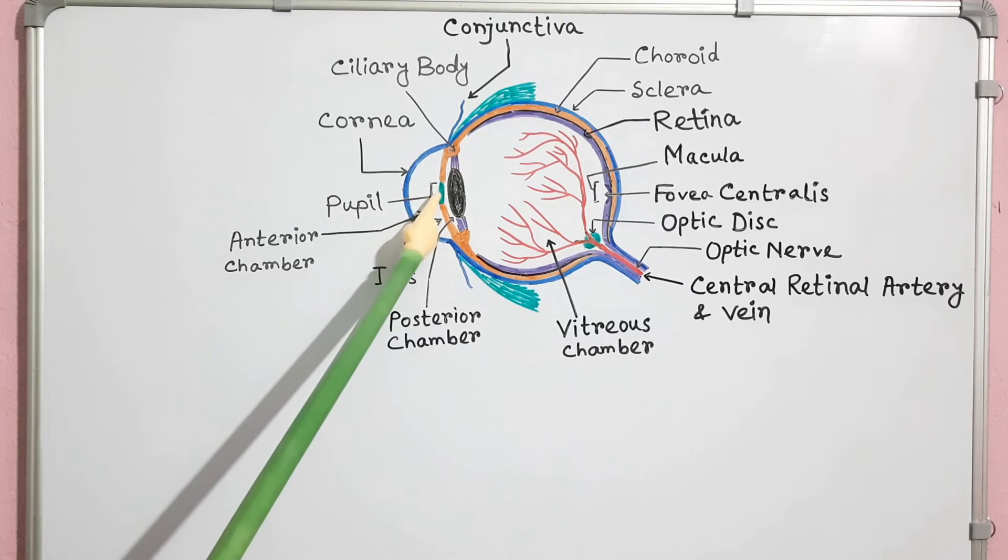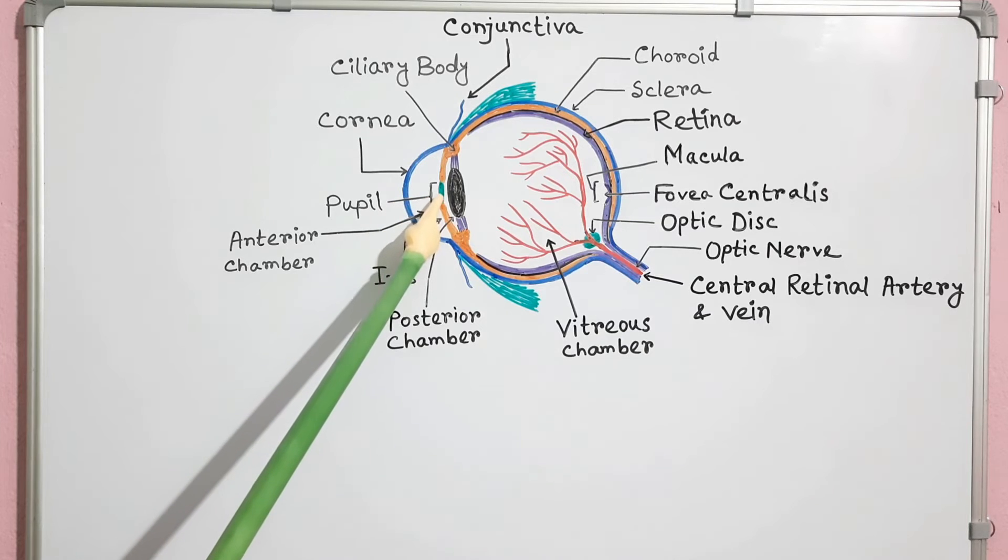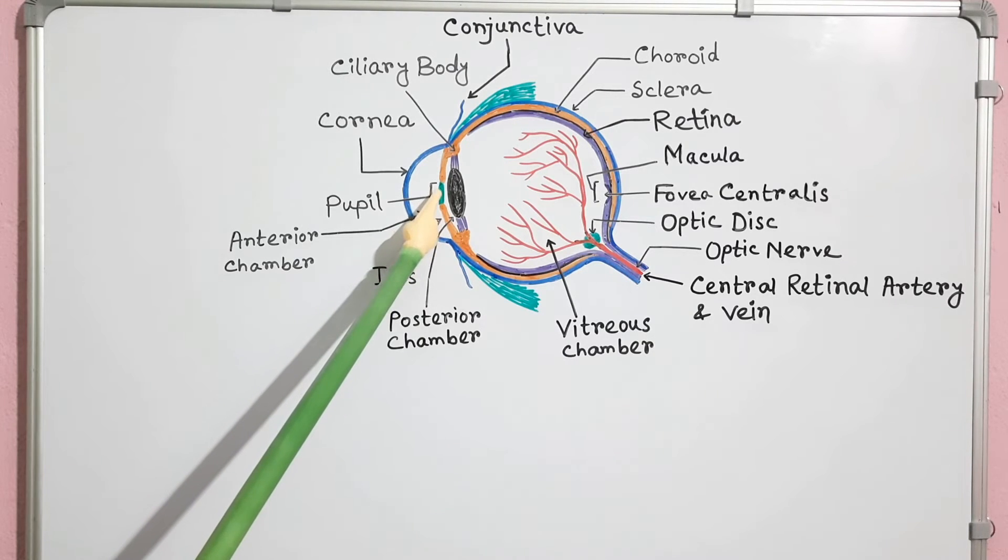This is the pupil. It is a central circular aperture of the iris. Light enters the eye through the pupil, and the iris regulates the amount of light by controlling the size of the pupil.